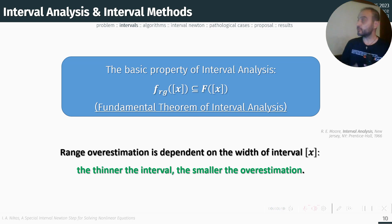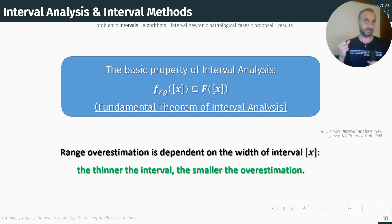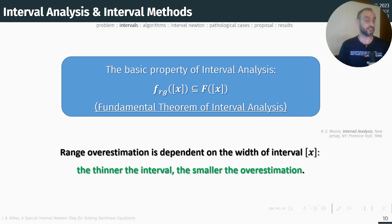Here is the basic property of interval analysis, which states that an interval computation of f over an interval contains the actual range of the function — this is called the fundamental theorem of interval analysis. The cost we pay for this theorem is that the enclosure is overestimated, but fortunately this overestimation is dependent on the width of the interval, so the thinner the interval, the smaller the overestimation.